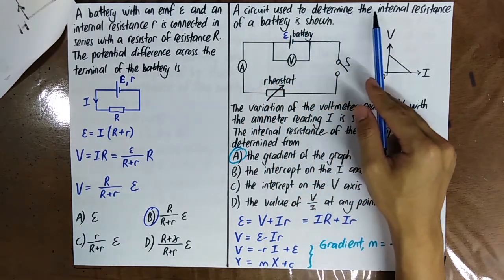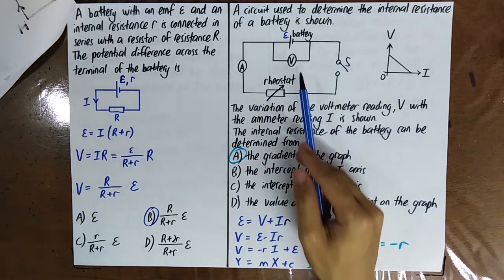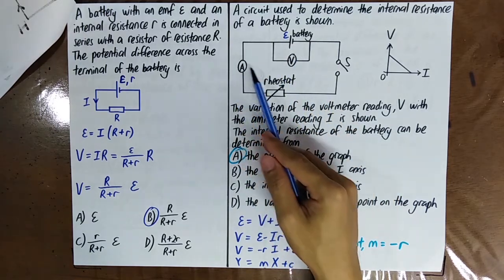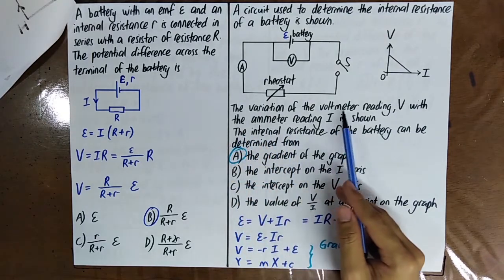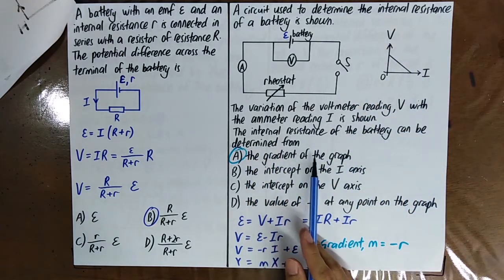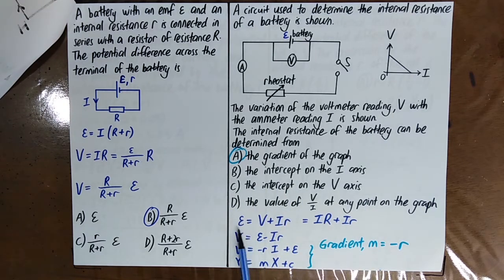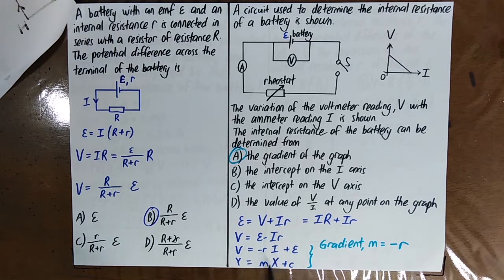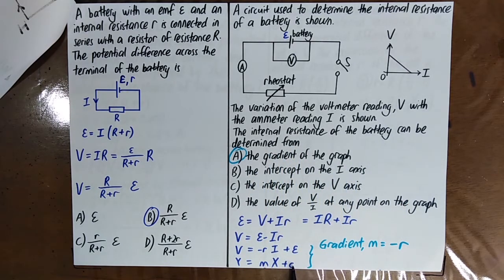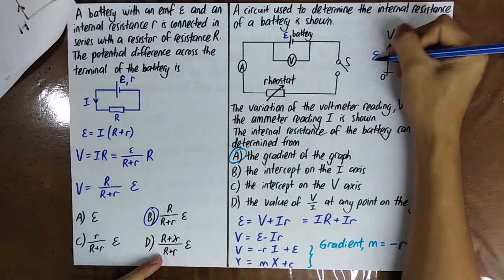A circuit is used to determine the internal resistance of a battery. The voltmeter is connected in parallel with the battery and the ammeter is connected in series with the circuit. The variation of voltmeter reading with ammeter reading is plotted. Using E equals V plus Ir, rearranged into the form y equals mx plus c, the y-axis is V and x-axis is I. The gradient equals negative internal resistance, so the internal resistance is determined from the gradient of the graph, and the y-intercept gives the EMF.